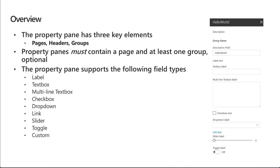The property pane has three key elements: pages, headers, and groups. A page is a whole panel that you can see on the task pane on the right. A header is the section at the top — in this screen it's where it says 'description' at the top. Groups contain different fields, which allows us to group things within a specific page. Property panes must contain a page and at least one group, with additional groups and fields being optional.